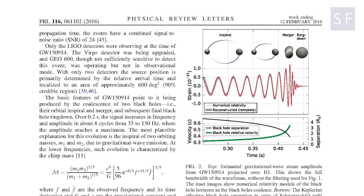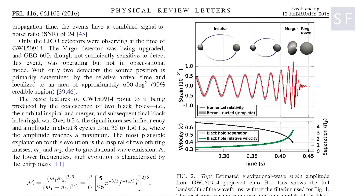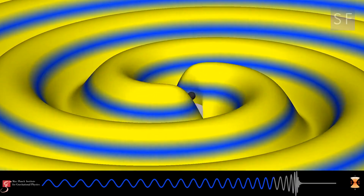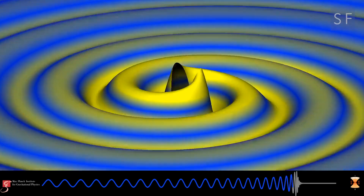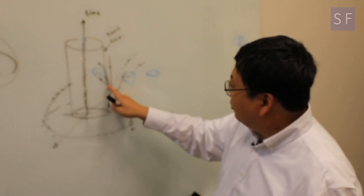I was working mainly with Kip and also a postdoc, Alessandra Buonano. We were working on theory projects. I was modeling waveforms from colliding black holes using the so-called post-Newtonian approximation — an analytic method for computing waves emitted by these sources. I was also doing calculations on how to apply quantum optics to the LIGO device, which is the configuration being used right now.